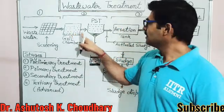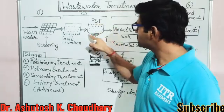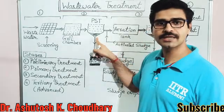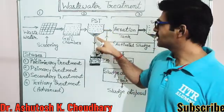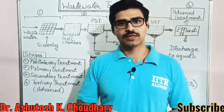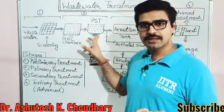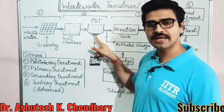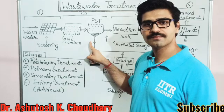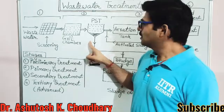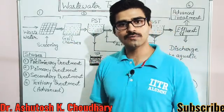Next is the PST — primary sedimentation tank. The primary sedimentation tank is generally conical in shape at the bottom. With time, some fine particles get settled under the influence of gravity. These settled particles form what is known as sludge. This step is primary treatment — removal of suspended particles from the water.